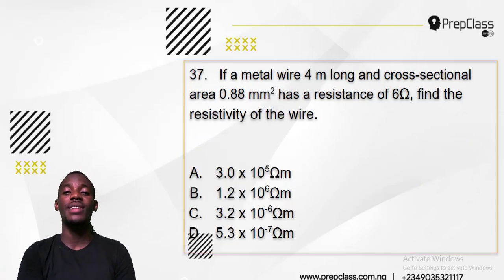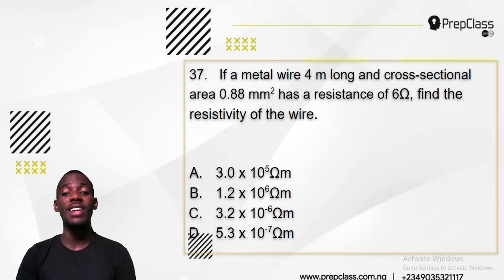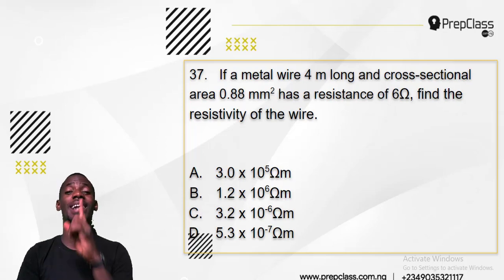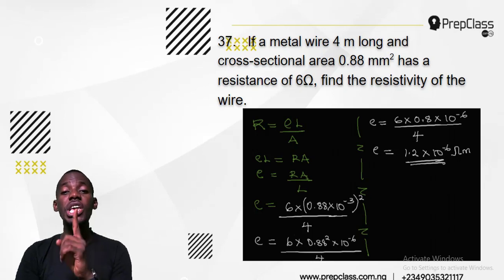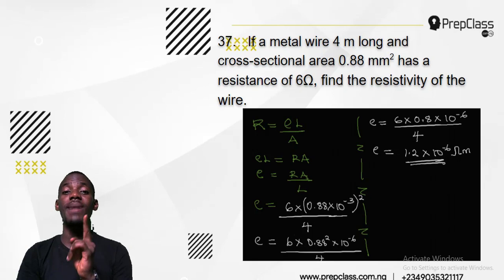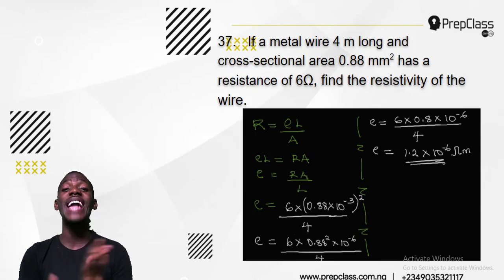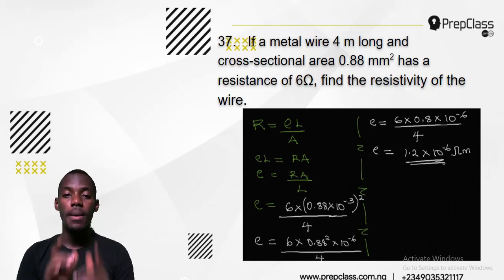Number 37: a metal wire 4 metres long with cross-sectional area 0.88 millimetre squared has a resistance of 6 ohms. Find the resistivity of the wire. When you get the word 'resistivity' in physics, only one formula can handle it. The formula is R equals ρL over A, where R is resistance, ρ (rho) is resistivity, L is length, and A is area. This is the only formula that can handle anything to do with resistivity in physics. Please take note.